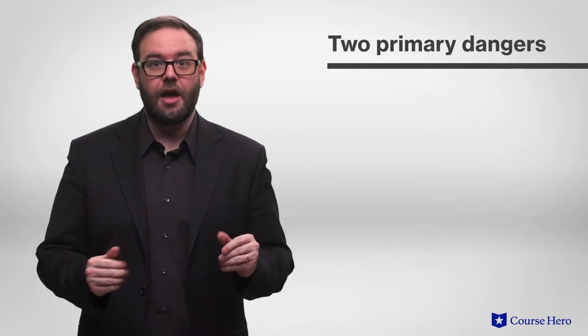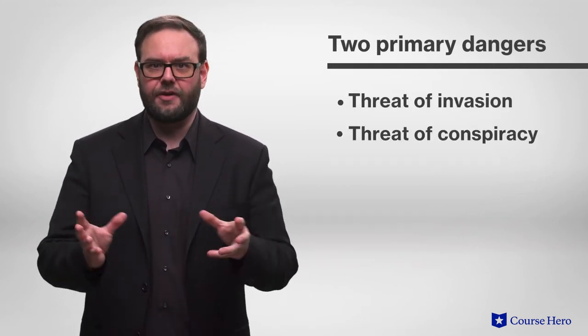Chapter 19 of The Prince is called The Need to Avoid Contempt and Hatred. Machiavelli discusses two primary dangers to a prince's domain: the threat of invasion and the threat of conspiracy.